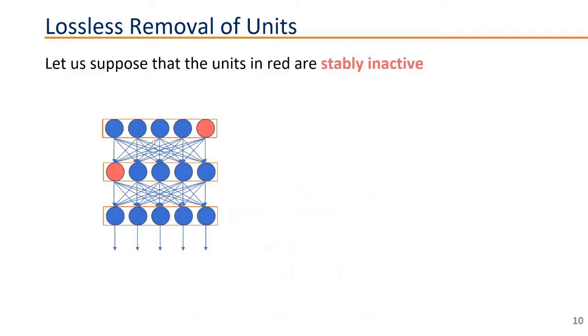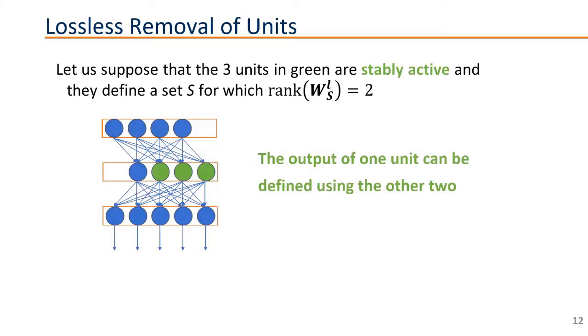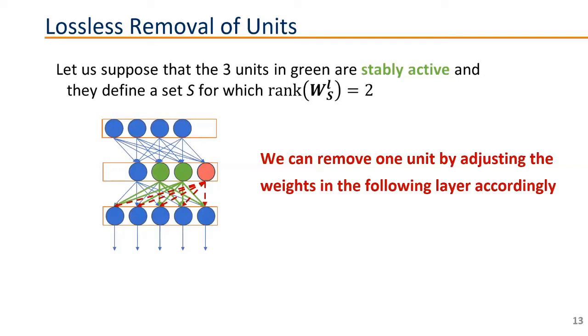So here's some examples in which we can do that. Let's say, for example, that we have some units that are stably inactive. Let's say we have these two units in red here in the neural network. That means that the output of these units is 0. So whatever comes from these units to the next layers is always a 0. So we can ignore the output of those units. And as a consequence, we can easily remove them from the neural network. Now, let's look at a more sophisticated example. Let's say that we have three stably active units in the same layer. And let's say that if we just create a matrix with the weights of these units, the rank of this matrix is two, which means this matrix is rank deficient. In that case, the output of one of these units can be fully defined by the output of the other two. So if we just adjust the weights of the units accordingly, we could remove one of them and have the neural network represent the same mapping from inputs to outputs.